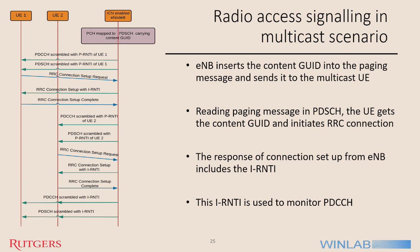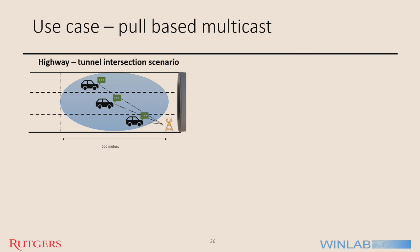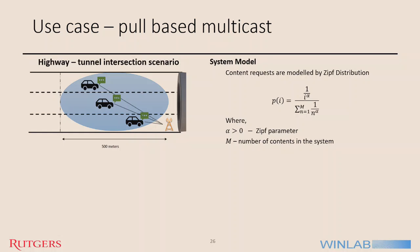To validate the efficacy of this design, we focus on a particular use case: pull-based multicast in a highway-tunnel intersection scenario. We consider an eNodeB at the start of the tunnel serving a region of 500 meters, and vehicles request content from this eNodeB. The system model has content requests modeled by a Zipf distribution. Zipf distribution captures content popularity, where alpha is the Zipf shape parameter — higher alpha means more steepness in content popularity.